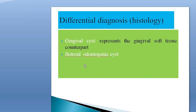Histologically, the lateral periodontal cyst is differentiated from gingival cyst of the adult and botryoid odontogenic cyst. Botryoid odontogenic cyst is the polycystic variant of the lateral periodontal cyst, and the gingival cyst of the adult shares the common histogenesis of the lateral periodontal cyst.